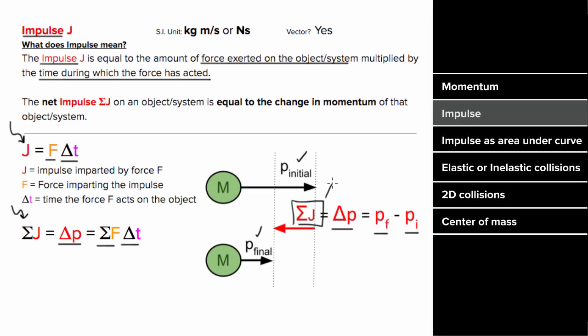And that net impulse is going to equal the net force on that object multiplied by the time during which that force was acting. And since impulse is a change in momentum, and momentum is a vector, that means impulse is also a vector. So it can be positive and negative.